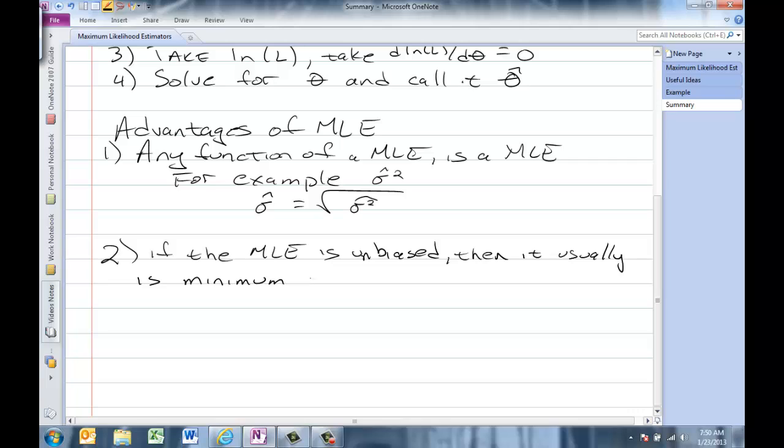In other words, it's a minimum variance unbiased estimator, which is very desirable properties. Unbiased, and of all the unbiased estimators, they'll have the minimum variance. Sometimes this notation is minimum variance unbiased estimator.